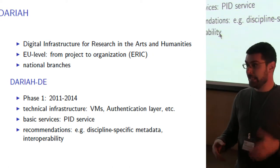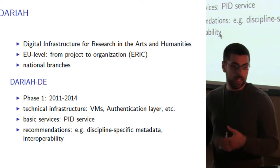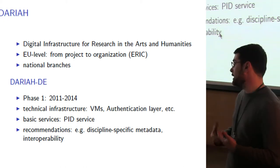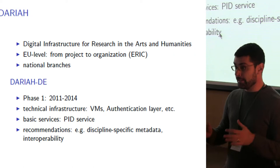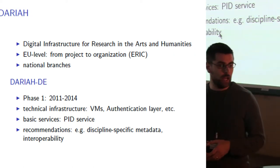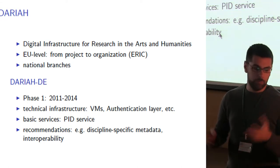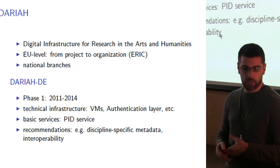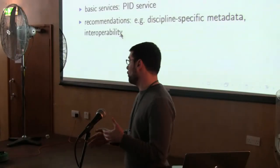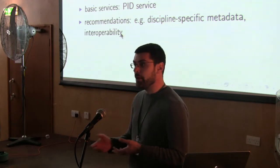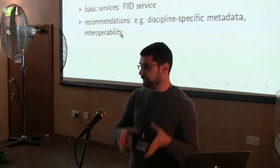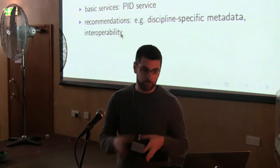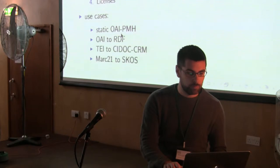The first phase started in 2011 and is finishing in 2014. The first phase was about starting to make a technical infrastructure made of digital machines — for instance, a new authentication layer, then some basic services like the persistent identifier service, and also some recommendations. One recommendation was about discipline-specific metadata — which metadata should be used in a specific discipline. Another set of recommendations was more about interoperability, interdisciplinary interoperability, which is the recommendation I worked on, and in the framework of these recommendations I developed this small use case which I'm presenting as a specified result.